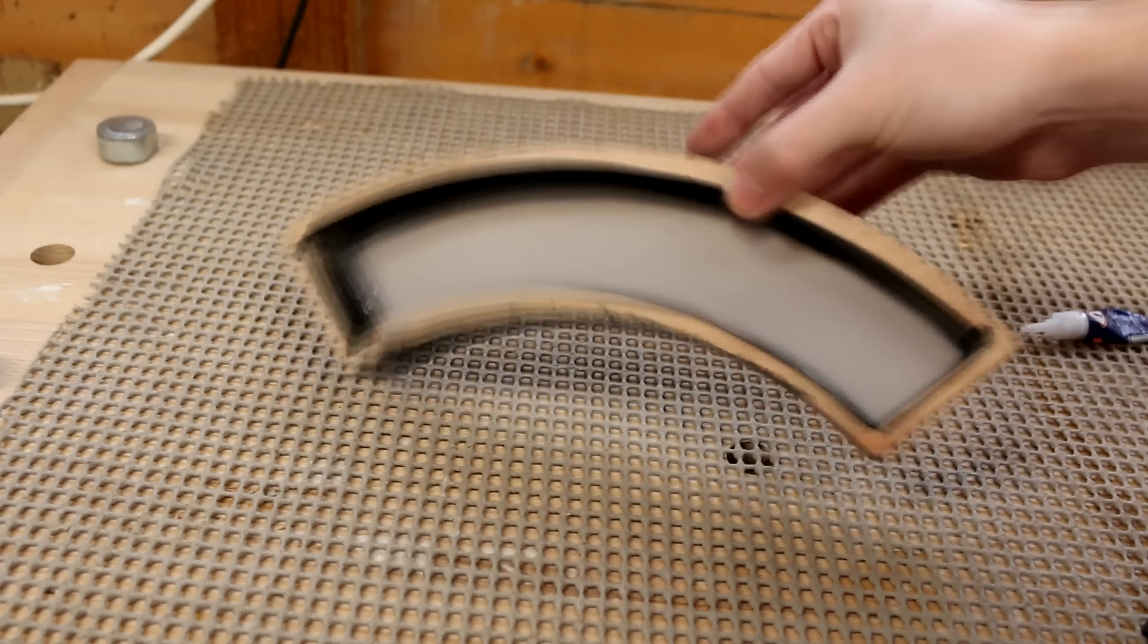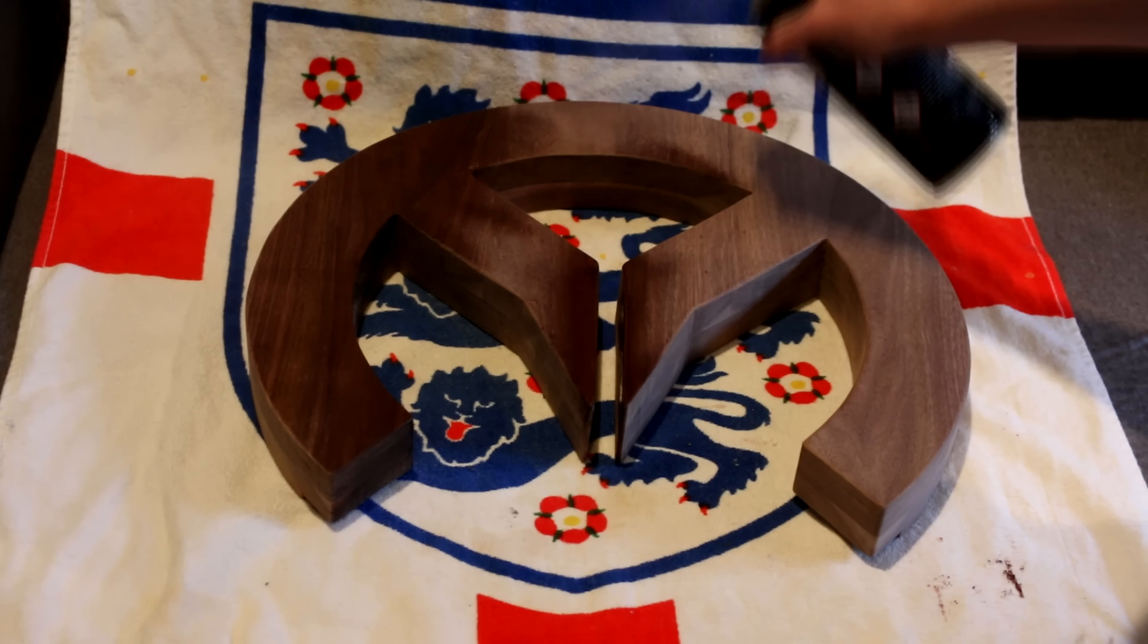I think this looks a lot better. Now that's done, I can give the walnut three coats of spray lacquer, sanding in between each coat.